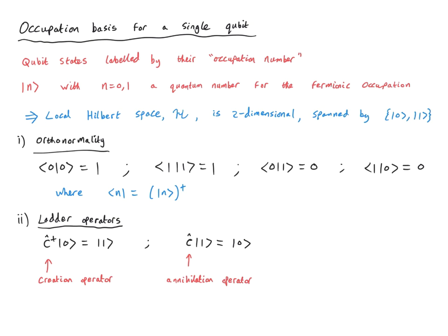The creation operator c-dagger is defined such that when it acts on the empty state, it gives us the occupied state. Therefore, it's like creating an electron in this state, and that's why we call it a creation operator. Likewise, the operator c is the corresponding annihilation operator. When c acts on the occupied state, it gives us the empty state — in that sense, it's annihilating the electron that's in this orbital. However, notice that we cannot annihilate an electron if it's not there. Therefore, the c-hat operator acting on the empty state gives zero — not the zero ket, but literally just equals zero. This means it is not possible to annihilate an electron in a state that has no electrons. Likewise, it is not possible to add an electron to a state that's already occupied. This, of course, embodies the Pauli principle.